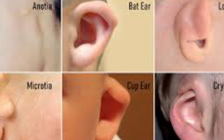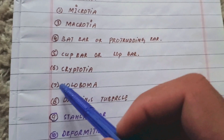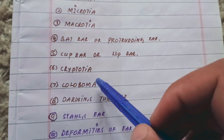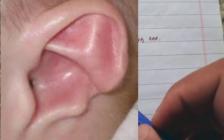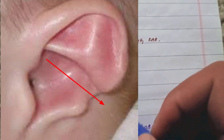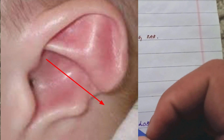The seventh condition is coloboma, in which the ear is divided in the midline by a transverse cleft.